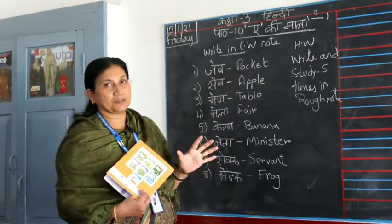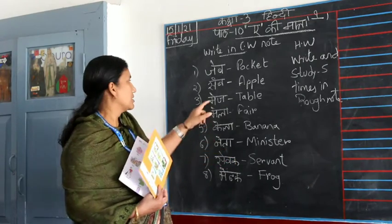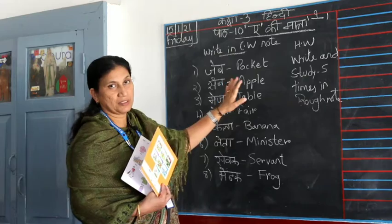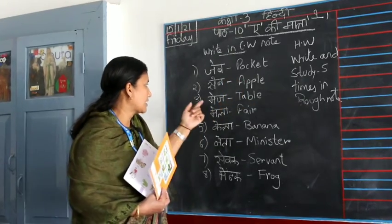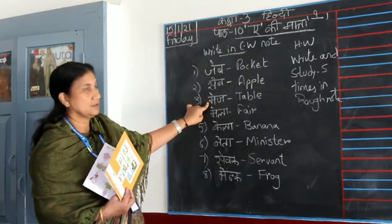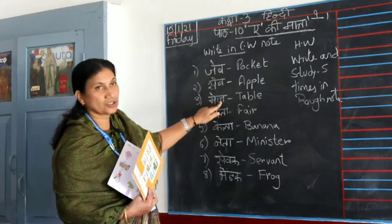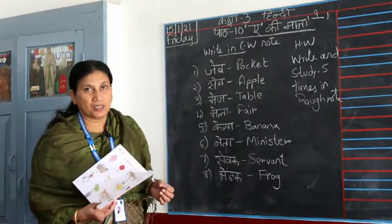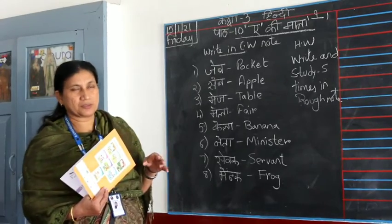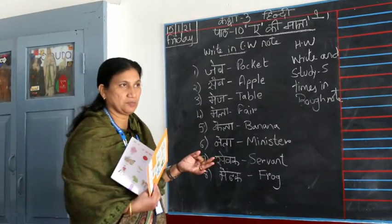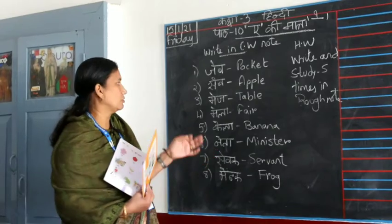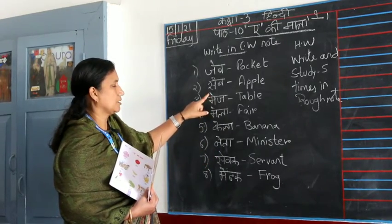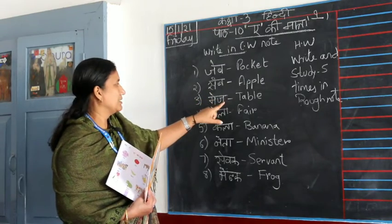The second one is 'Seb.' S-E-B. Seb means apple. You've all seen an apple — seb means apple. The third one is 'Meja.' M-E-J-A. Meja means a table. Sometimes in Hindi, meja can also mean a stage, but here it means a table.